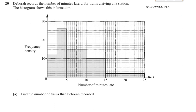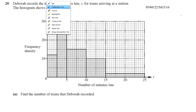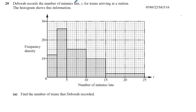May, June 2016, paper 2, variant 2, question 20 — a question about histograms. Deborah records the number of minutes late T for trains arriving at a station.